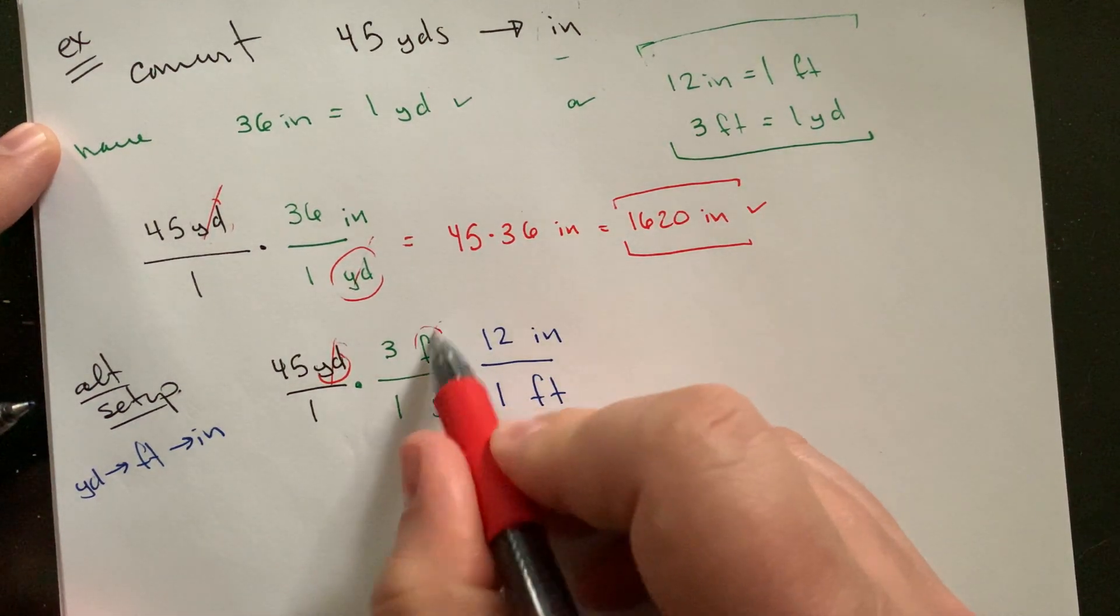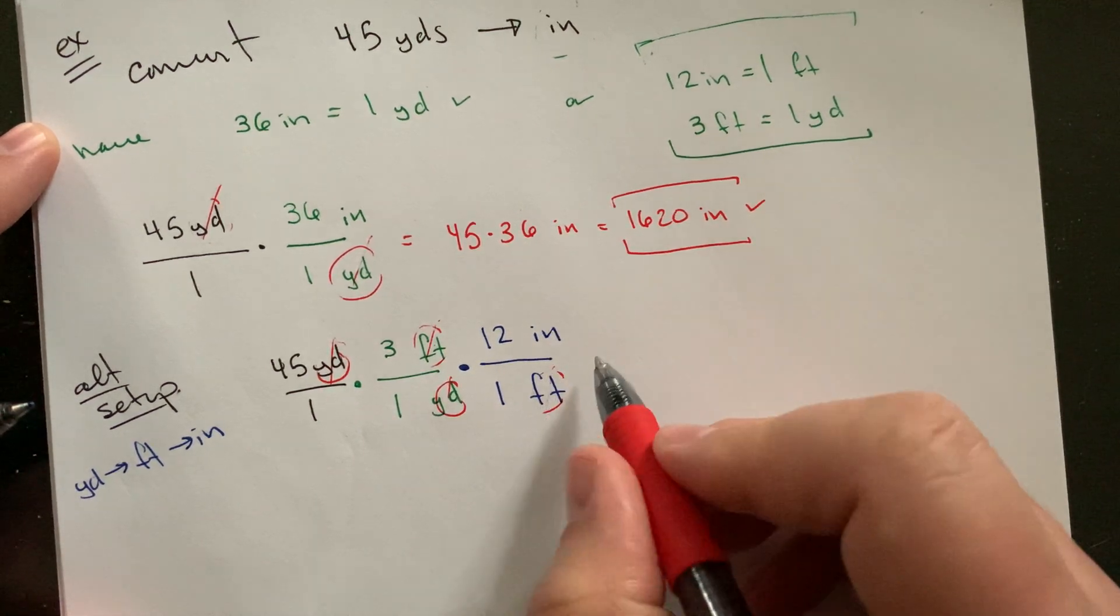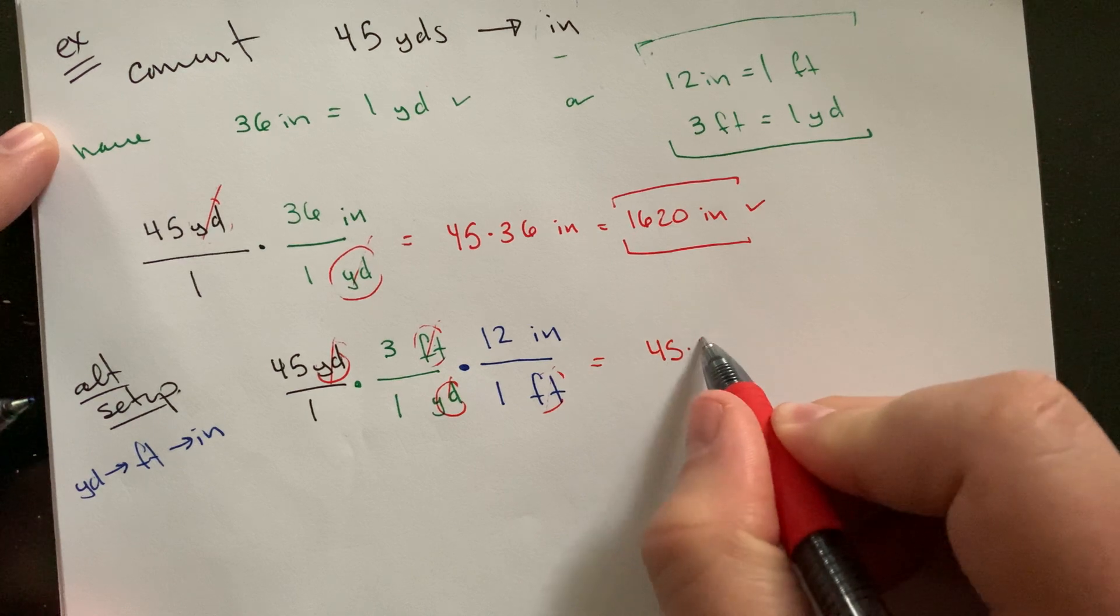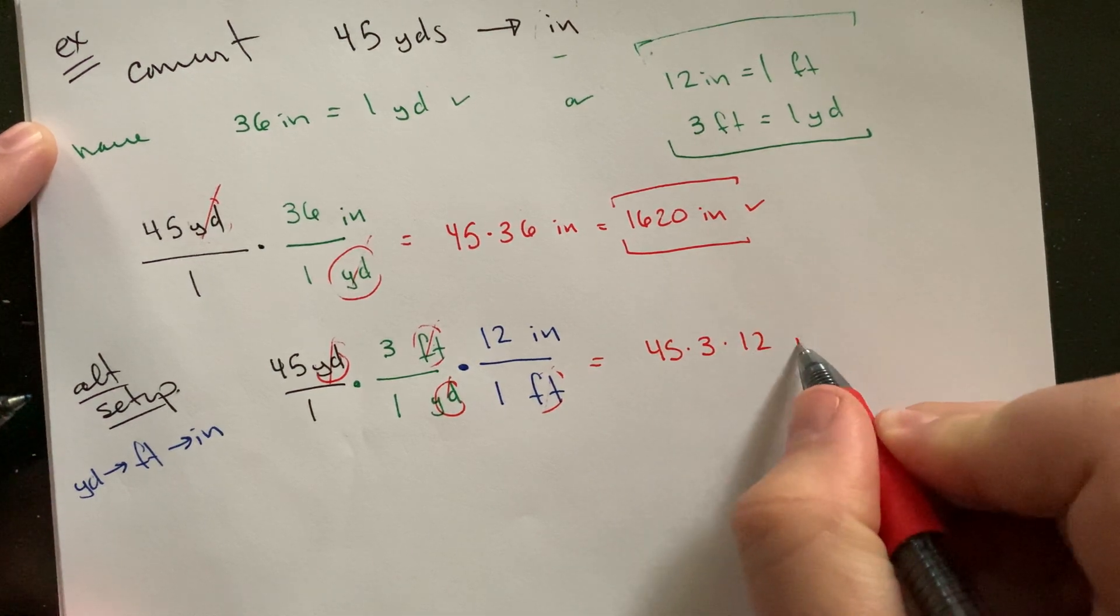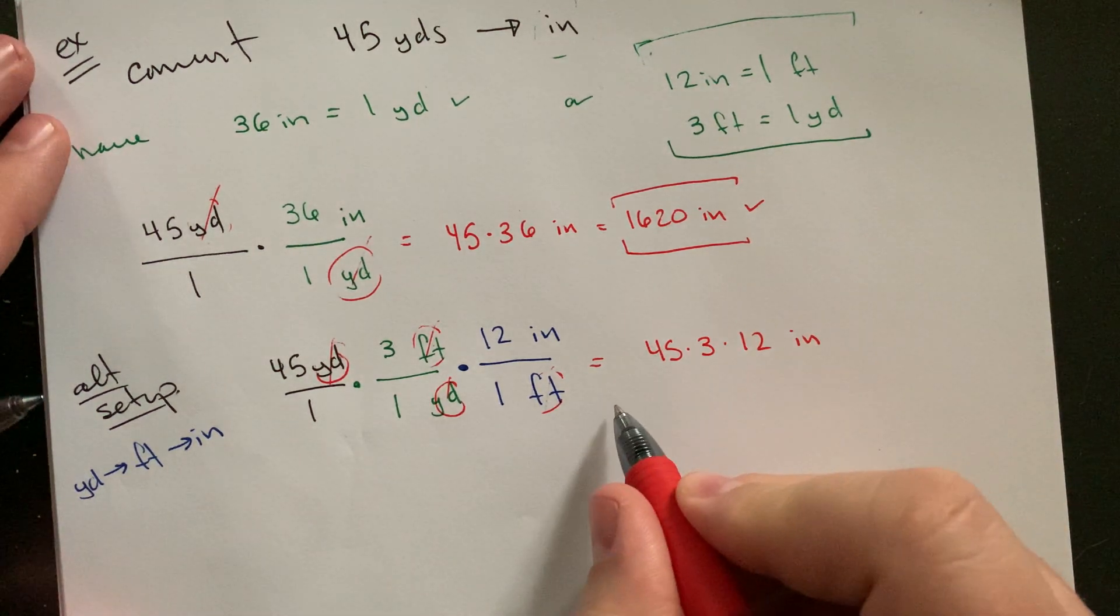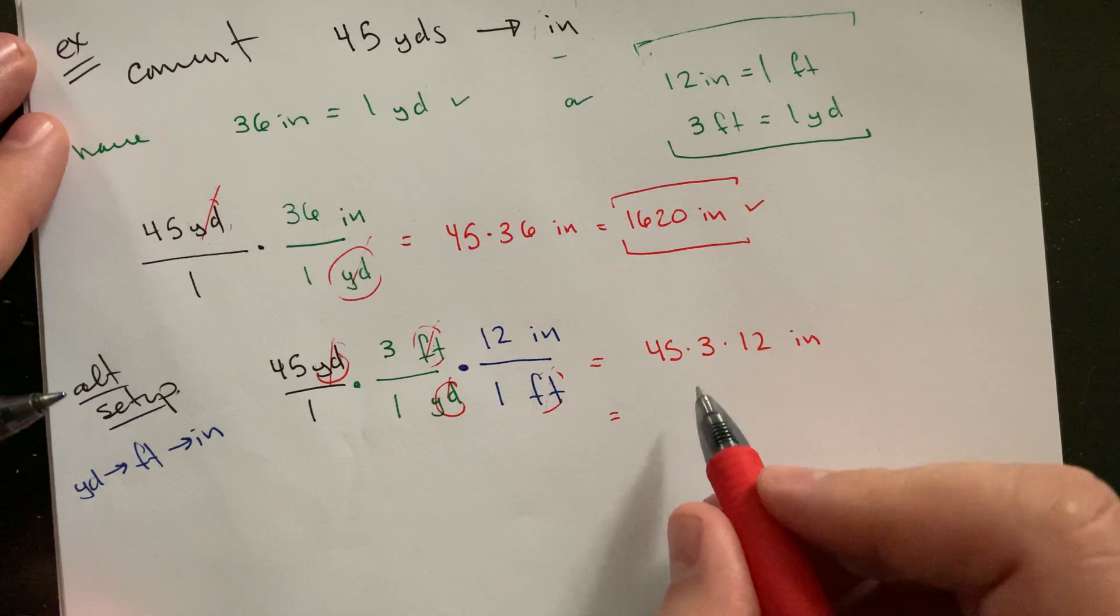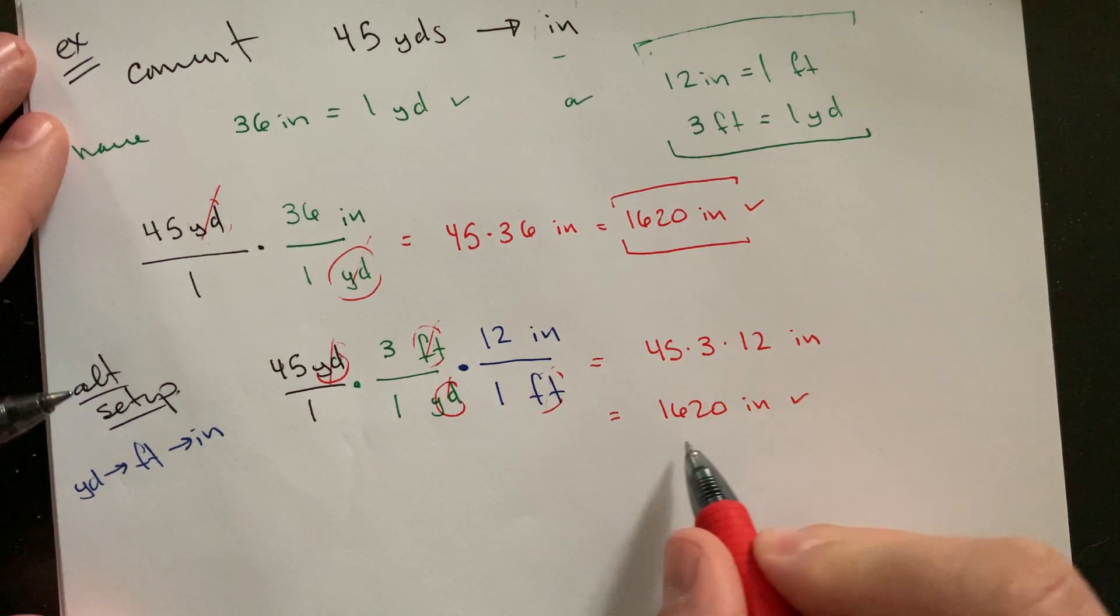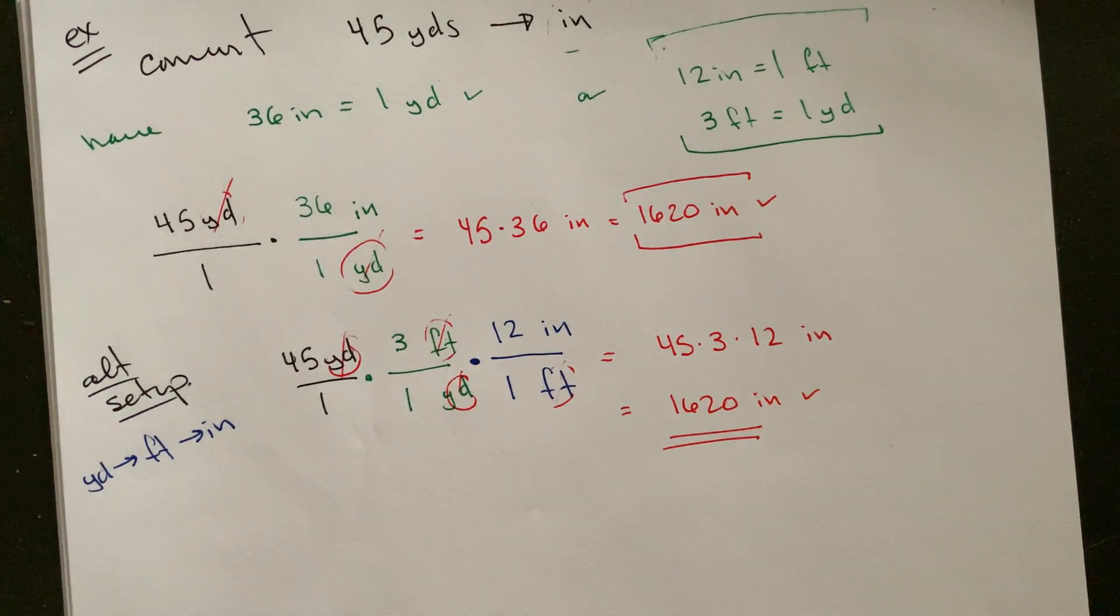Yards cancel, feet cancel feet. This is all just one, so this becomes 45 times 3 times 12 inches. That obviously is going to be the same thing as 45 times 36. 105 times 12 would get us there. And so in theory, this is still just going to be 1620. So we're still ending up in the same spot. It's just a little bit of a different way to get there.